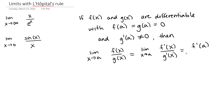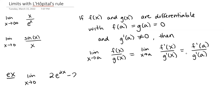So we just evaluate f prime at a, and we also evaluate g prime at a. Let's look at an example of this. Our example here: we will have the limit as x goes to 0. In our numerator, we have 2e to the 2x minus 2, and then our denominator, we have 6x.